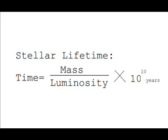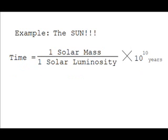That constant is 10 to the 10th power years. For those of you at home, that is 10 billion years — that's the constant we're talking about. There are a couple of different ways to get this stellar lifetime for main sequence stars, but this is the easiest one and the one we'll be using in class.